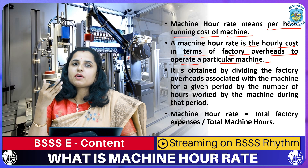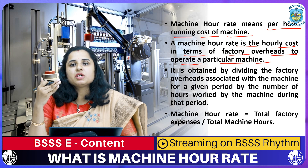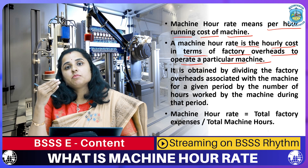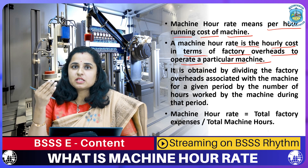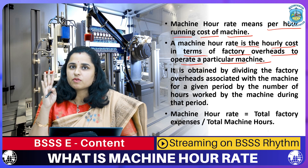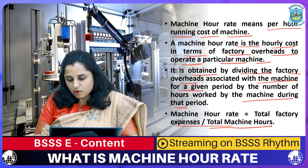Factory overheads are the indirect material, indirect labor, and indirect expenses used in the factory — such as rent of factory, insurance of machine, and power expenses. When you add all these expenses you get factory overheads. Machine Hour Rate is calculated by dividing factory overheads associated with the machine by the total machine hours of that month or period.